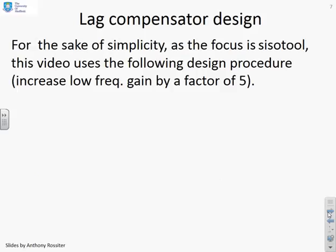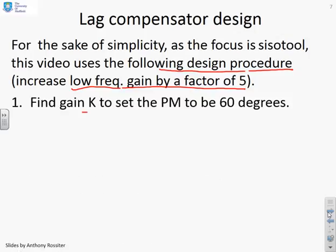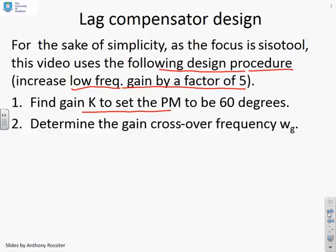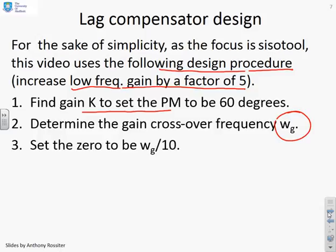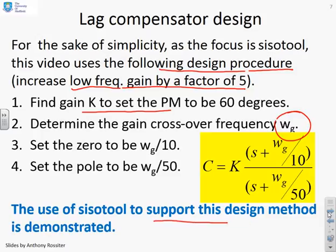For simplicity, this video uses a very simple design procedure: we're using the lag to increase low frequency gain by a factor of five. First, find the gain K to set the phase margin to 60 degrees—60 degrees is somewhat arbitrary but good enough for systematic design. Next, determine the gain crossover frequency omega_g. Then set the zero of the lag to be omega_g over 10, and set the pole of the lag to be omega_g over 50, without changing the underlying K. Your compensator is given by: K times (s + omega_g/10) divided by (s + omega_g/50). This compensator will increase your low frequency gain by a factor of five while retaining a phase margin close to 60 degrees.